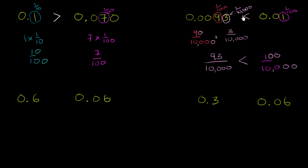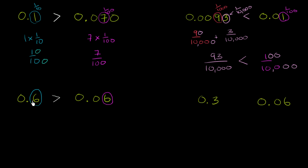So this quantity, 0.093, is less than 0.01. The less-than symbol's small end points to the smaller number and the larger end to the larger number — that's true of both less-than and greater-than. Now let's look at 0.6 versus 0.06. Here I have a 6 in the tenths place, so it literally represents six tenths. In the second number, I have a 6 in the hundredths place. Six hundredths is definitely smaller than six tenths — a hundredth is a tenth of a tenth. So 0.6 is greater than 0.06.